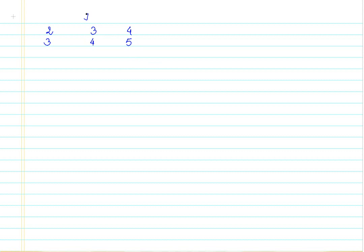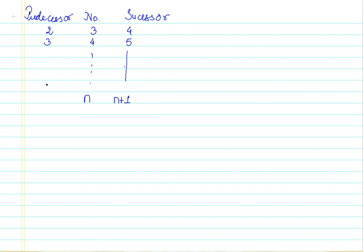So let me write here: this is the number, this is the successor. This can continue forever. If I have a number n, I can say that adding 1 to it will give me a successor, and subtracting 1 will give me a predecessor. So the algebraic expression for a successor is always n plus 1, and a predecessor is always n minus 1, for a number n.